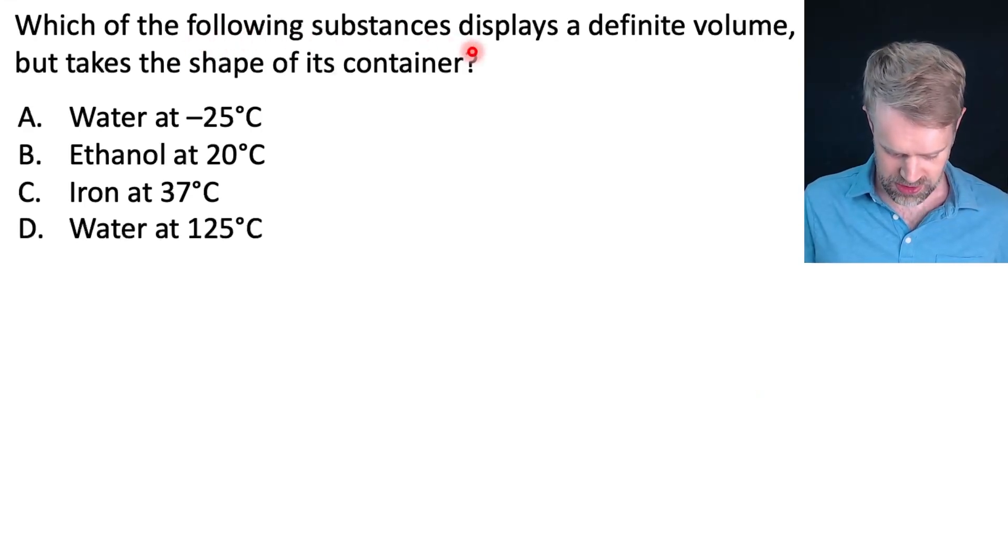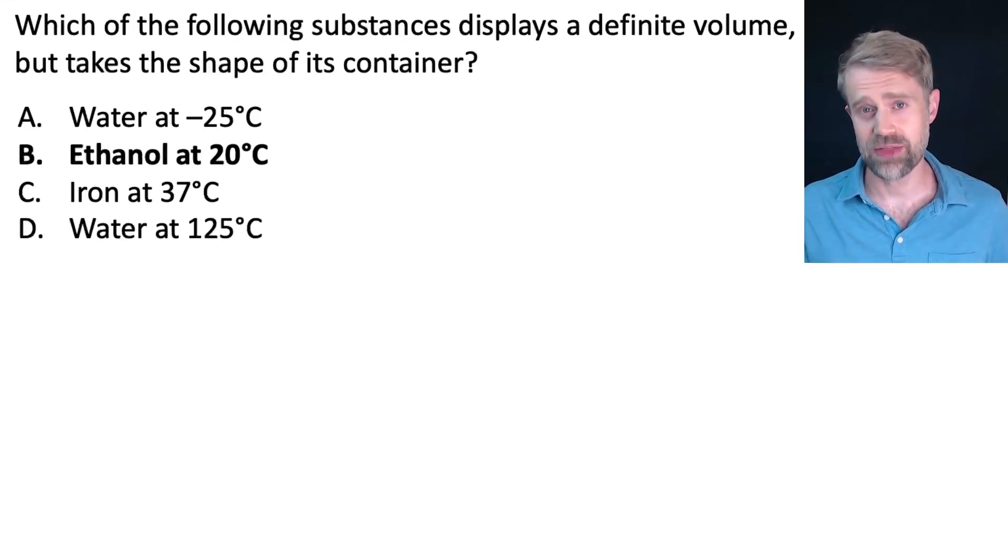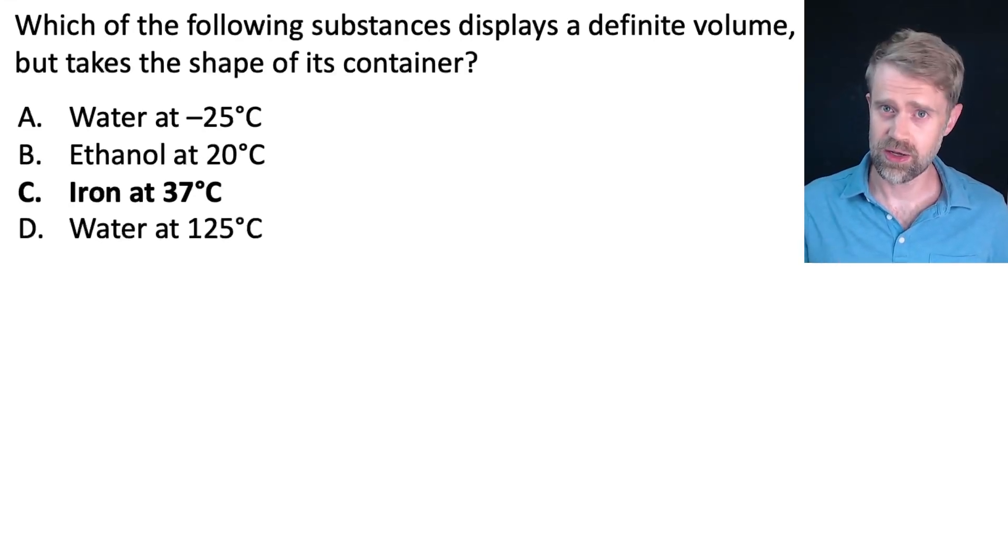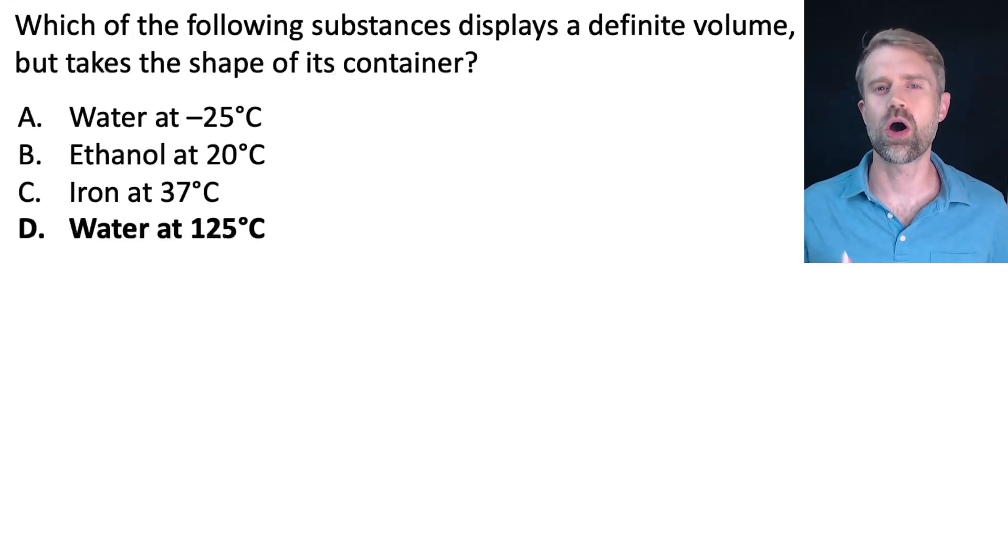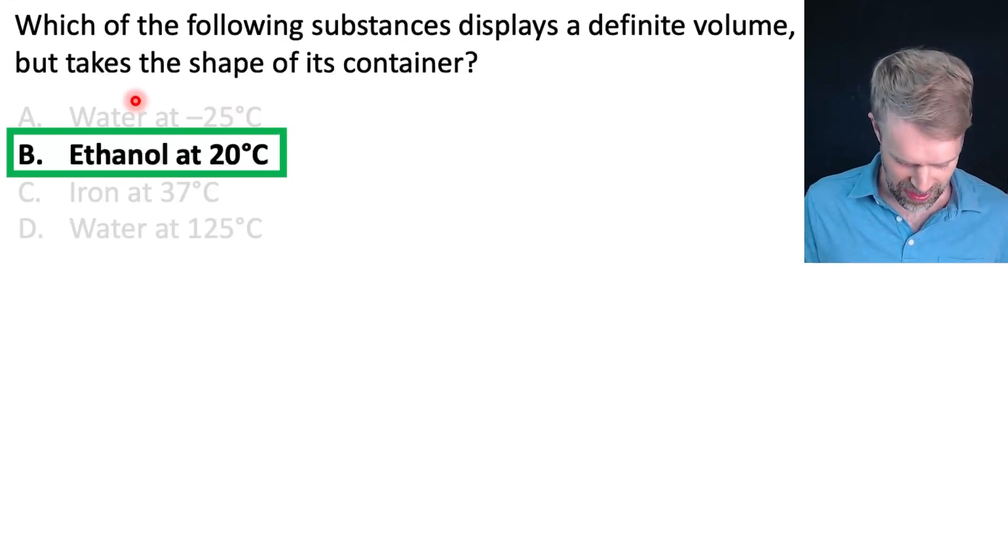Which of the following substances displays a definite volume, but takes the shape of its container? Is it water at negative 25 degrees Celsius, ethanol at 20 degrees Celsius, iron at 37 degrees Celsius, or water at 125 degrees Celsius? Pause the video for a second if you want to think about it, and the answer is B, ethanol at 20 degrees Celsius.